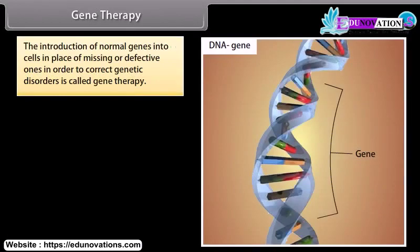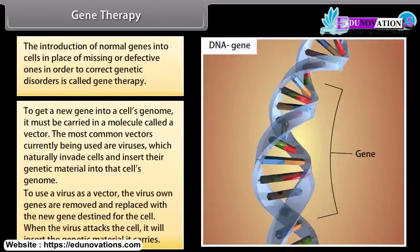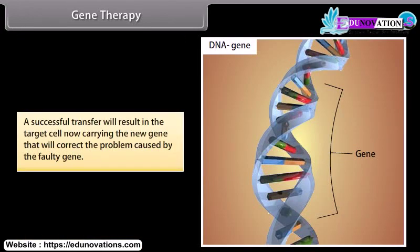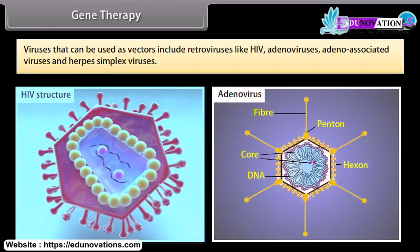Gene Therapy: The introduction of normal genes into cells in place of missing or defective ones in order to correct genetic disorders is called gene therapy. To get a new gene into a cell's genome, it must be carried in a molecule called a vector. The most common vectors currently used are viruses, which naturally invade cells and insert their genetic material into the cell's genome. The virus's own genes are removed and replaced with the new gene. A successful transfer will result in the target cell carrying the new gene that corrects the problem. Viruses that can be used as vectors include retroviruses like HIV, adenoviruses, adeno-associated viruses, and herpes simplex viruses.